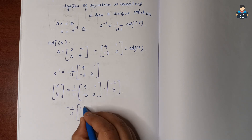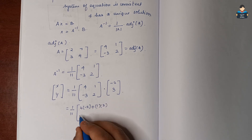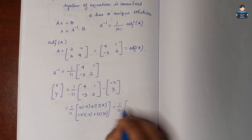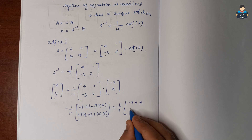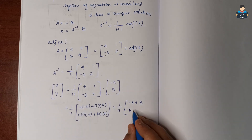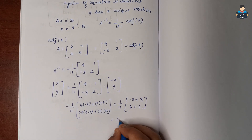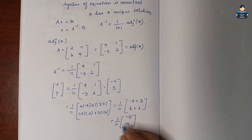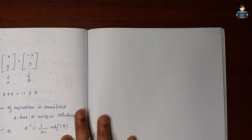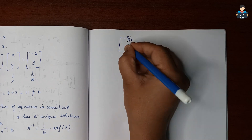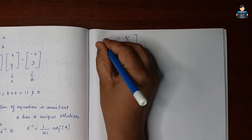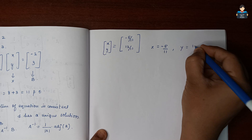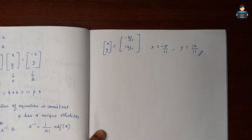Solving: 4 times minus 2 is minus 8 plus 1 times 3 is 3, giving minus 5. And minus 3 times minus 2 is 6 plus 2 times 3 is 6, giving 12. So we get 1 over 11 times [-5; 12]. Therefore x equals minus 5 over 11, y equals 12 over 11. This is the final answer for Question 8.